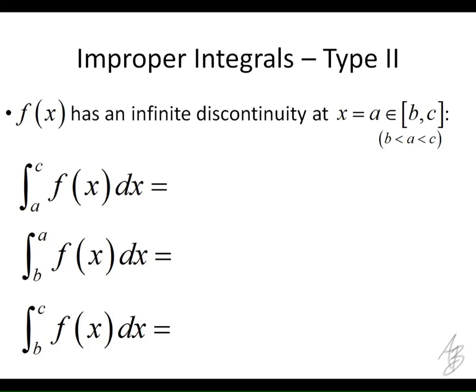The other type of improper integrals — Type II — involves an infinite discontinuity, which we'll discuss later. An infinite discontinuity doesn't mean infinitely many discontinuities; it means there's a discontinuity where the function has a vertical asymptote. So an infinite discontinuity is just another name for a vertical asymptote. If we have a vertical asymptote, instead of the area being infinitely wide, the area is going to be infinitely tall.